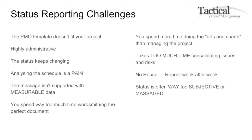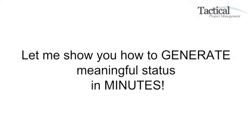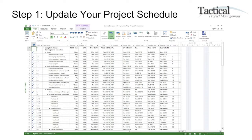Status is often way too subjective and often massaged to get the right message across — maybe influenced through politics or making sure we communicate the right message versus the true project status. Let me show you how you can generate meaningful status in minutes. You start out with your Microsoft Project schedule that you've already updated, identified progress, as well as late tasks, and have made the proper updates.